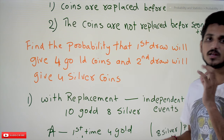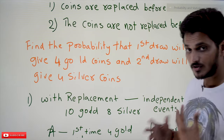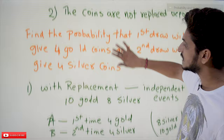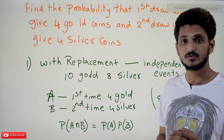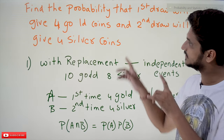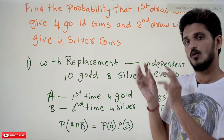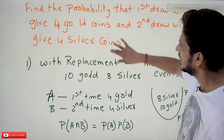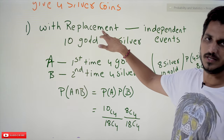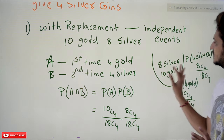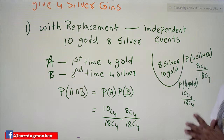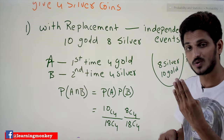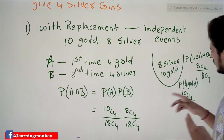First we have to understand what replacement means and what not-replacement means. In our last class when we discussed dependent and independent events, we clearly discussed this. In this example we are going to refresh the concept. With replacement means: in our bag we have 8 silver and 10 gold coins. If you want to select four gold coins the first time, what is the probability?